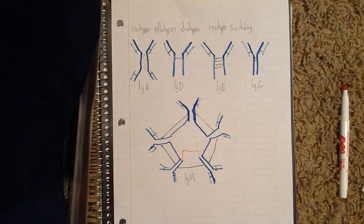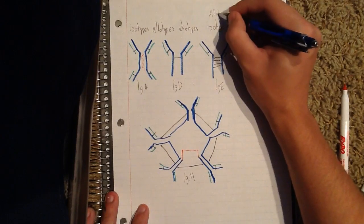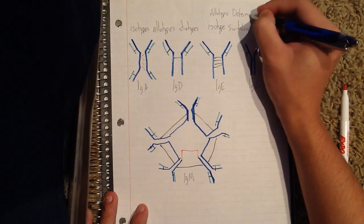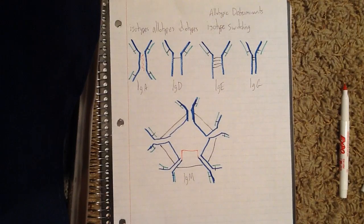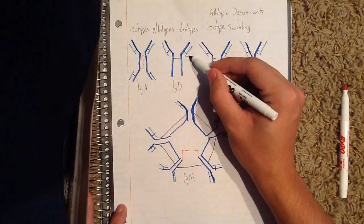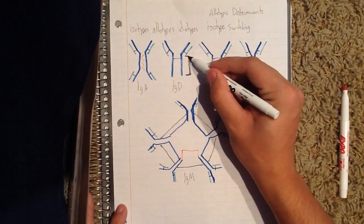To understand what allotypes are, we'll have to explain what allotypic determinants are. An allotypic determinant is an antigenic determinant that'll vary among the members of a species of an animal, and this will be located at the constant region of an antibody, which will be right in this area of an antibody.